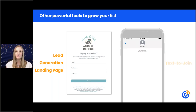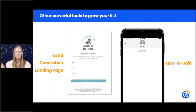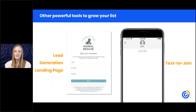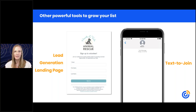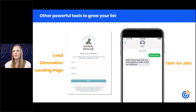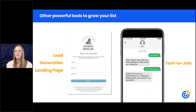Another tool is called Text to Join. In your account, you create a keyword related to your organization's name or cause, and you'll get a phone number back. Use that keyword and phone number to create a sign and post it anywhere — it's great for events and wherever you interact with people. Supporters will see the sign and text that keyword to the phone number, get a message asking for their email address, enter it, and receive a thank you message. It only takes a couple of minutes to set up and is very easy for contacts too.